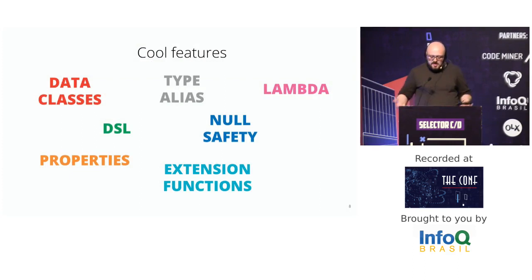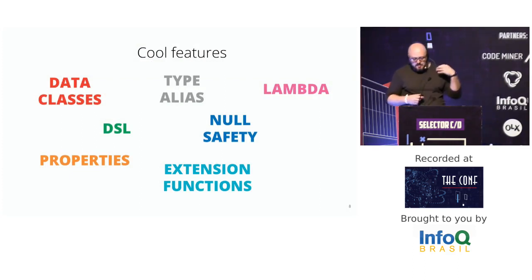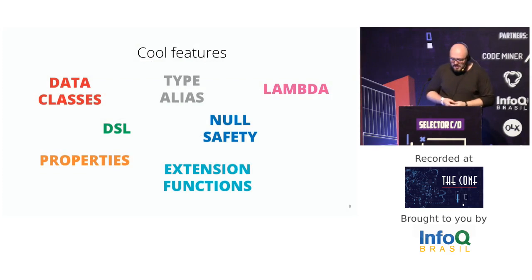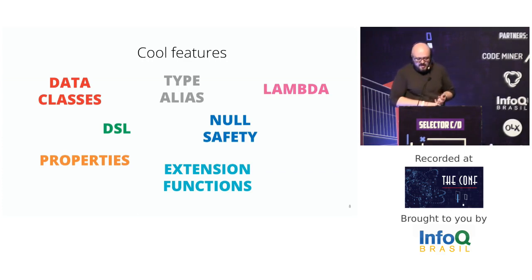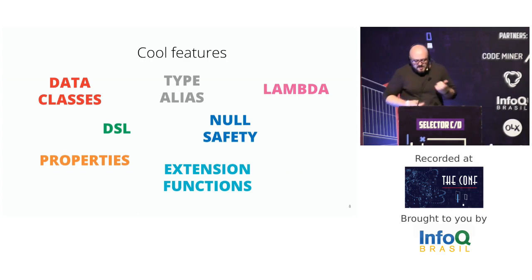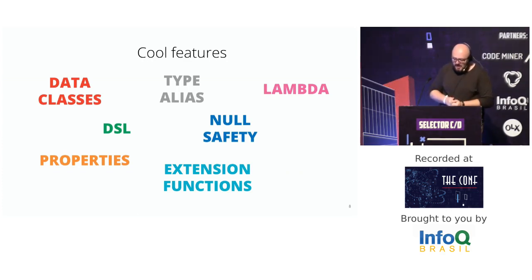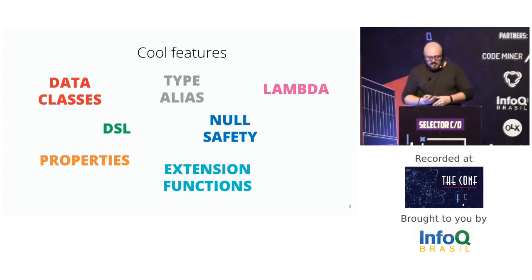So what makes Kotlin a great language? Here are some of the features it offers: data classes for data, type aliases for clarity, null safety, properties, extension functions, and other features that make Kotlin a robust set of tools when developing various types of applications — not only on Android.